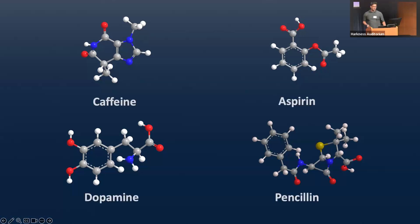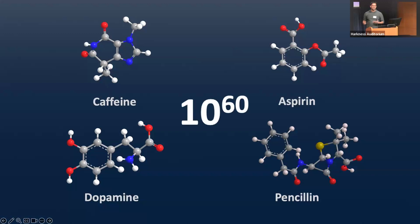Some of these molecules are things that we like — caffeine, aspirin, penicillin. But if we consider all possible molecules that you could potentially assemble from all the elements available in the periodic table, you come up with a number that's really, really big: 10 to the 60. This number is bigger than the size of the known universe. So to find the next compound that's going to cure Alzheimer's or breast cancer in such a large space is a really, really tricky problem to solve.